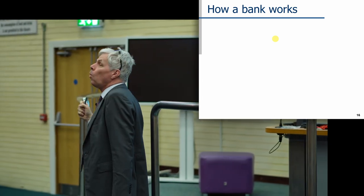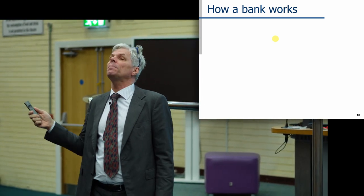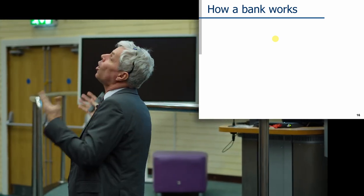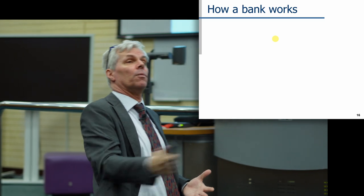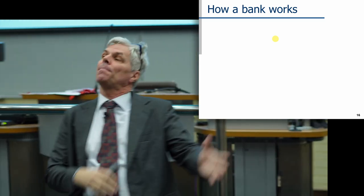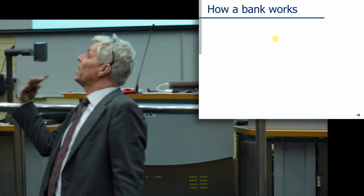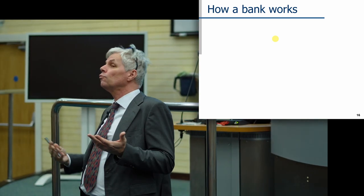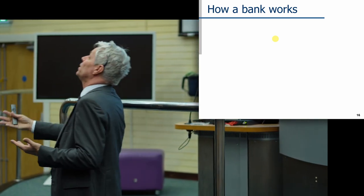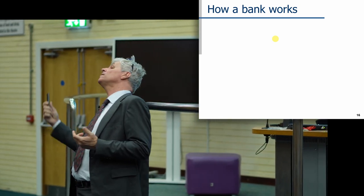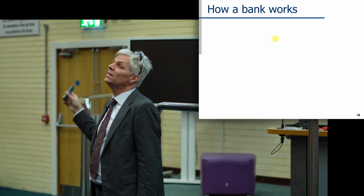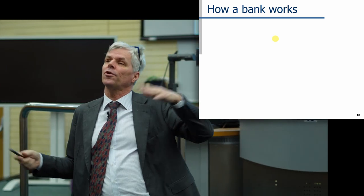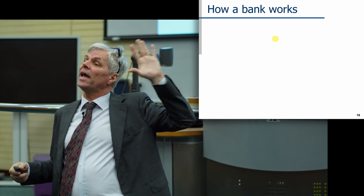Why does that happen? Why do banks work like that? Back in the 1800s this kind of thing happened all the time — every couple of years there'd be another hundred banks that went under in a mad panic, with people lining up and fighting for their money, and a lot of people not getting it. This was a repeated thing that happened over and over again.